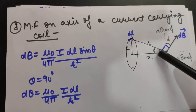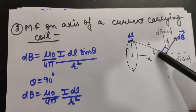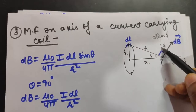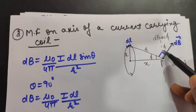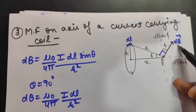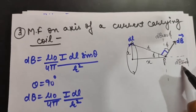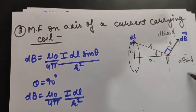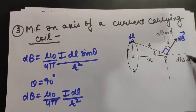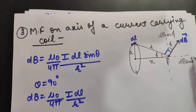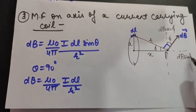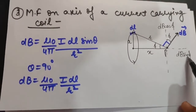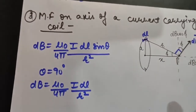We consider this angle to be φ, so this will be 90 − φ, and we are left with φ here. We can resolve DB into components: DB cos φ and DB sin φ. If we choose a similar element on the other side, its DB cos φ components cancel out, and we are only left with DB sin φ in this direction.